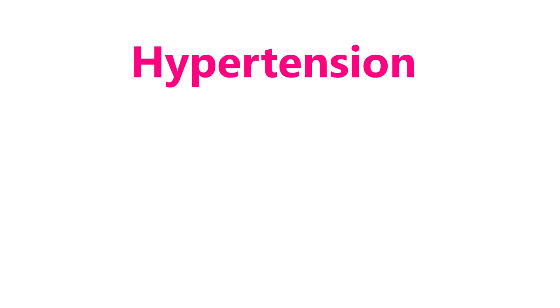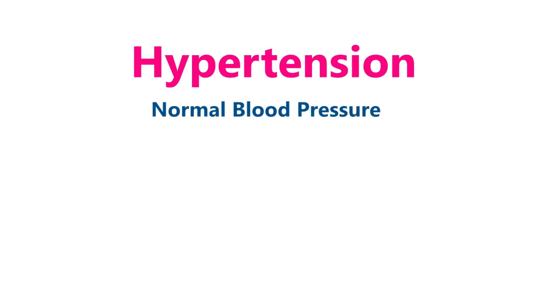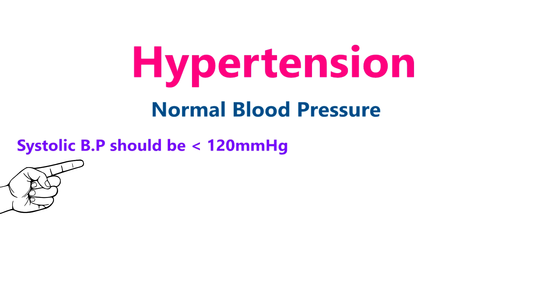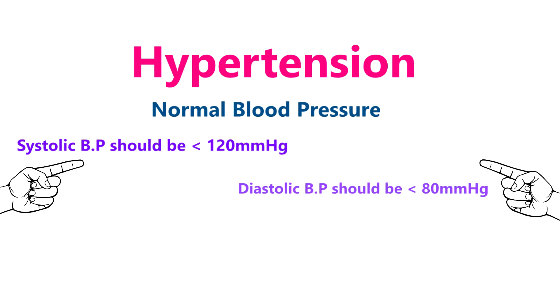Hypertension is known as high blood pressure. What is normal blood pressure? Normal BP: systolic BP is 120 mmHg, and diastolic BP is 80 mmHg. This is normal BP.